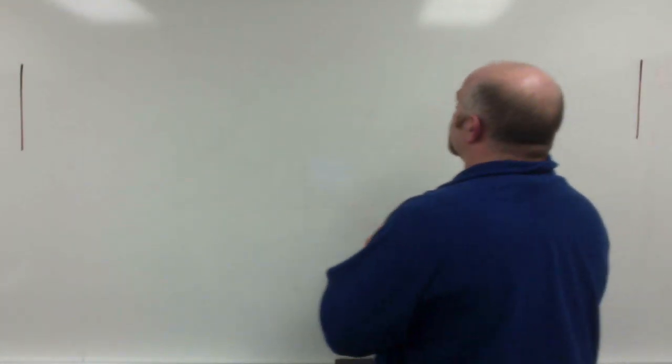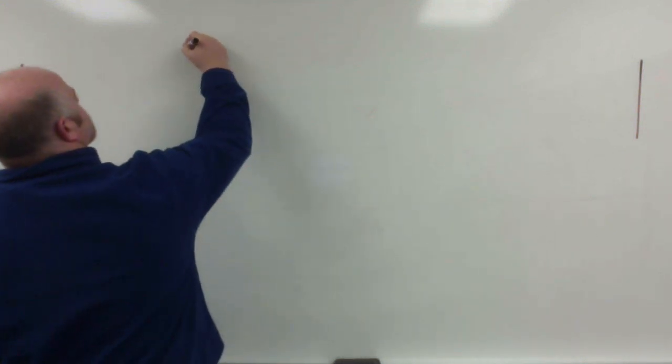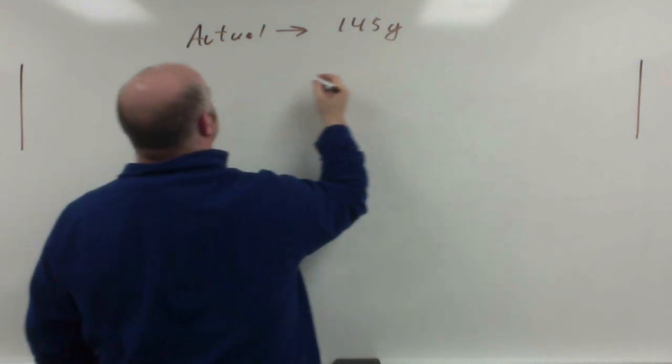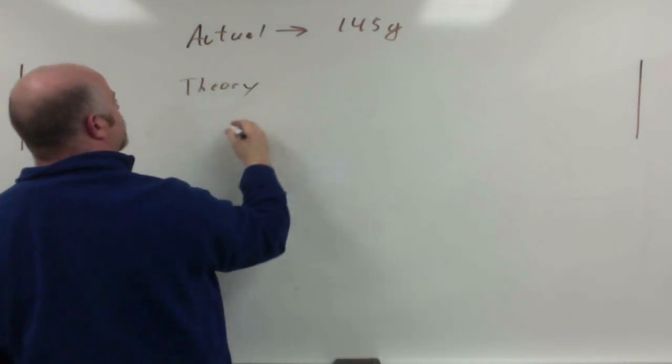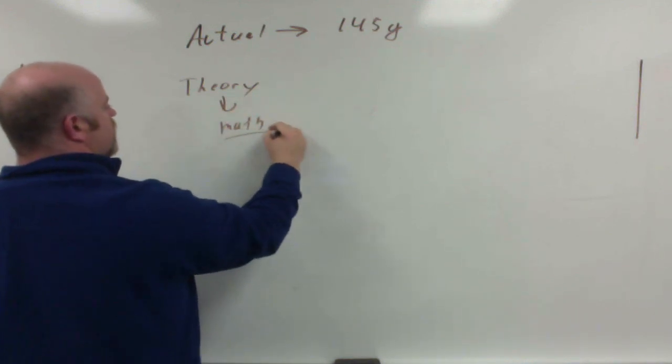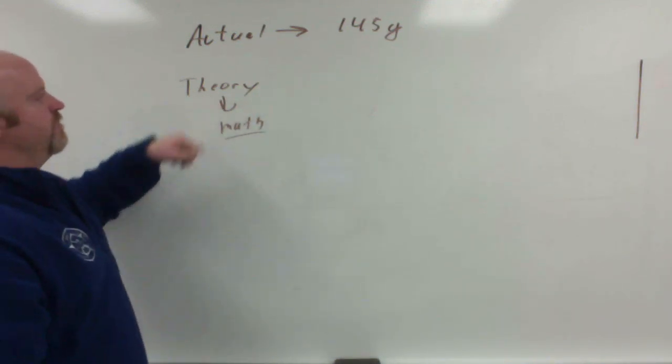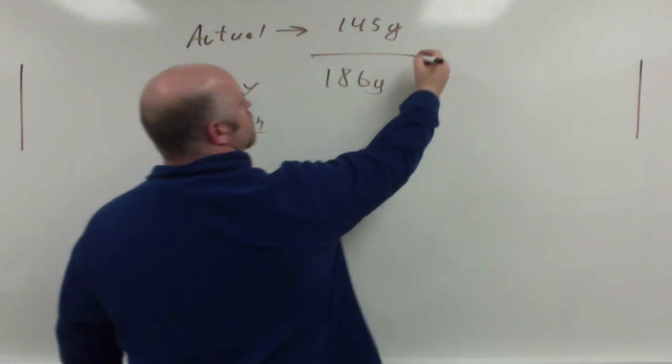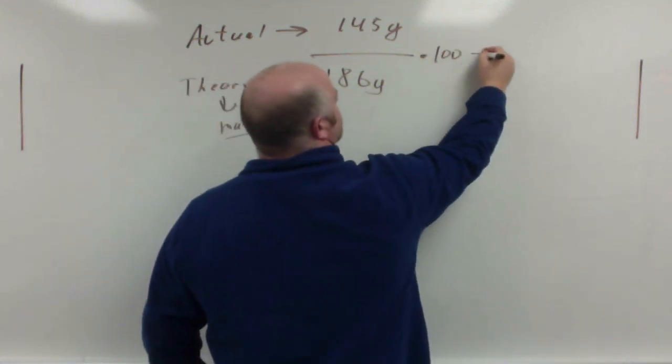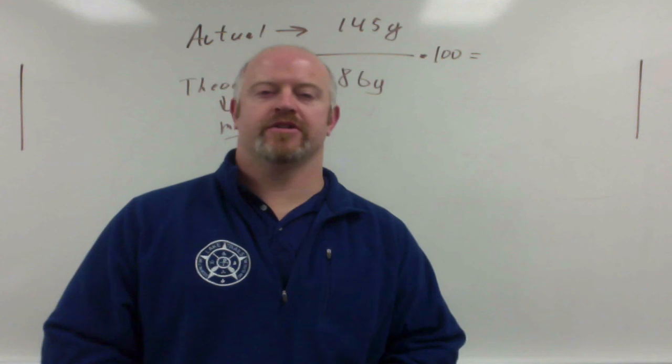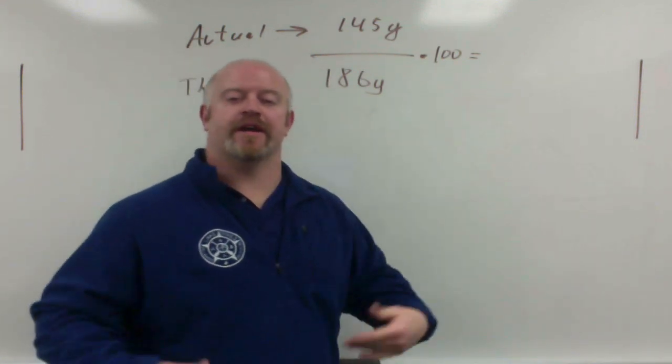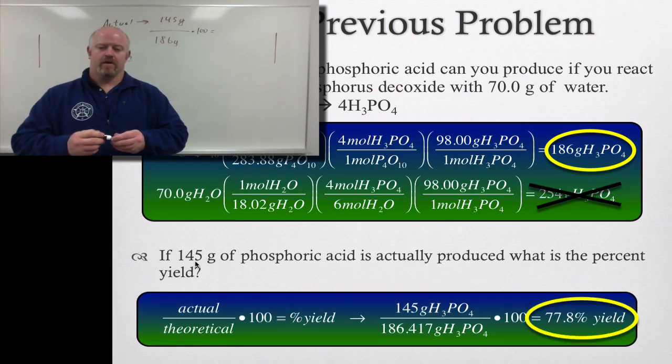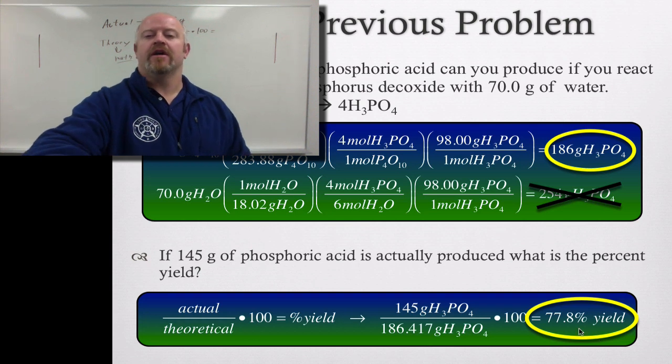So our actual is 145 grams. Theory, remember theory comes from the math that we do, so mathematically we said we should have gotten 186 grams. All we have to do is divide those two, take it times 100, and that will tell us how much yield we had or how efficient our chemistry process is running. So if we do that math, we see that we have a 77.8% yield.